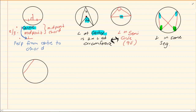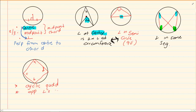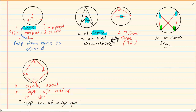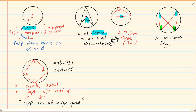The next theorem is opposite angles of a cyclic quad equal to 180 degrees. We have a cyclic quad and the opposite angles add up to 180 degrees. The reasoning to use is: opposite angles of a cyclic quad. That means A plus B equals 180 degrees, and C plus D equals 180 degrees — they are opposite to each other.